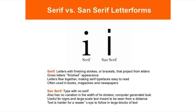Sans serif means with no serif — there are no extra strokes, brackets, or lines. It's a minimal text that also has no variation in the width of its strokes. It has a computer-generated look, useful for signs and large-scale text meant to be seen from a distance. Text is harder for a reader's eye to follow in large blocks of text, so we mainly use sans serif for display fonts, as it doesn't have any extra appearances — it's just simple and minimal.